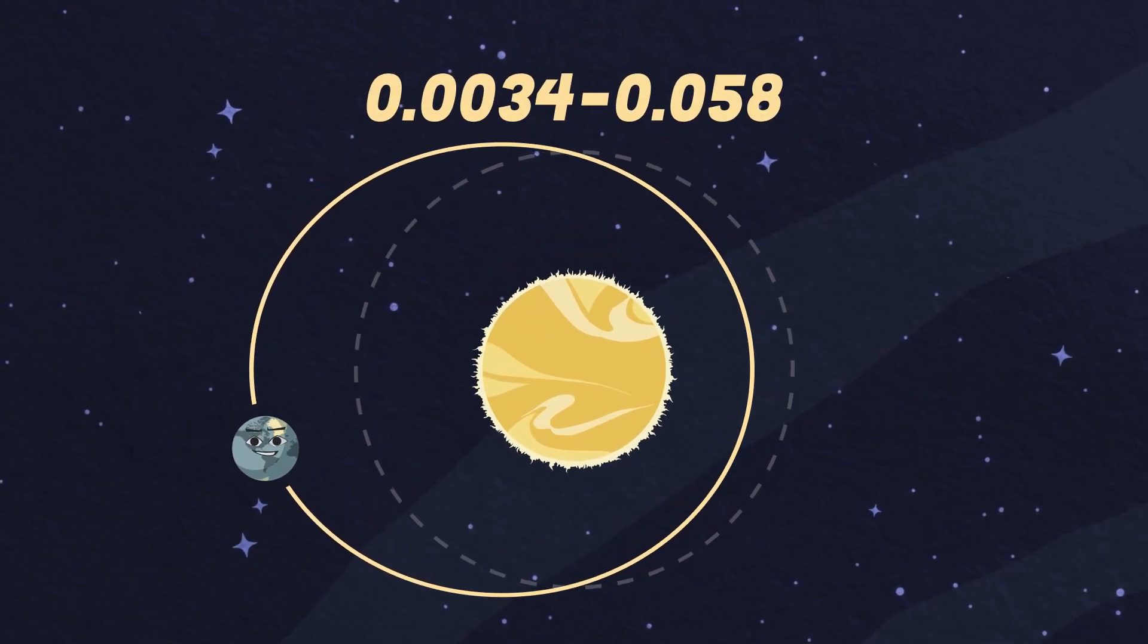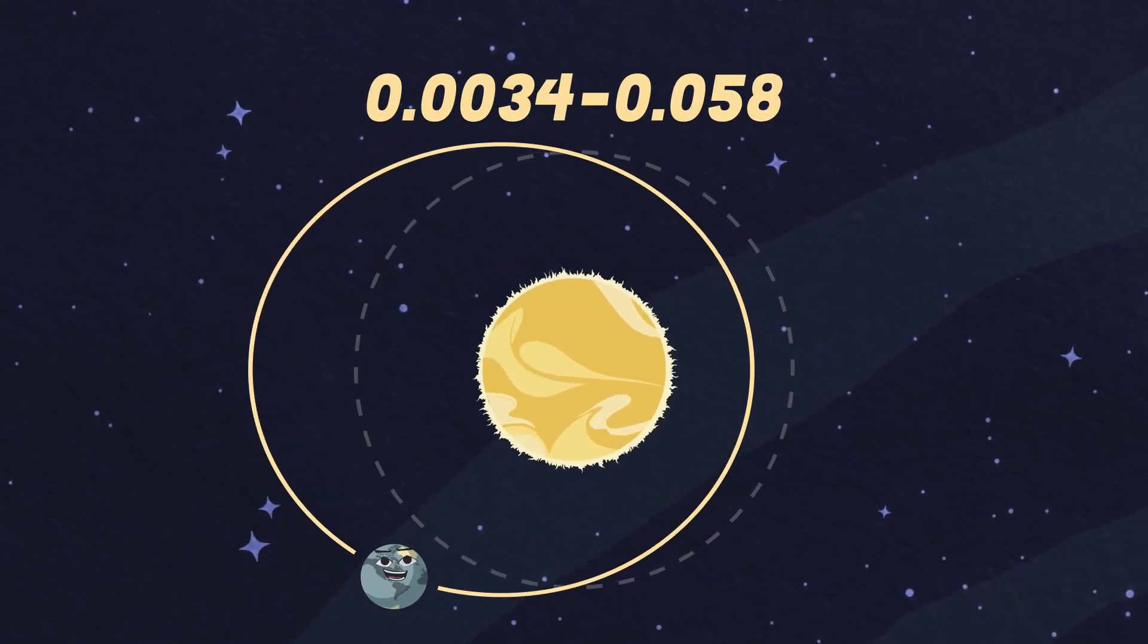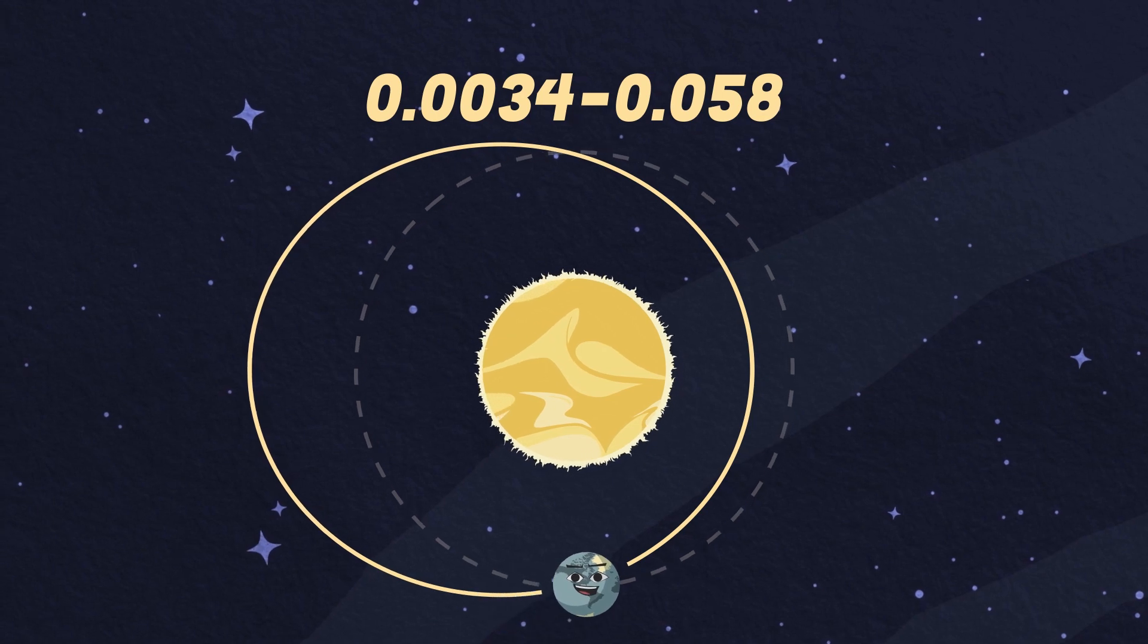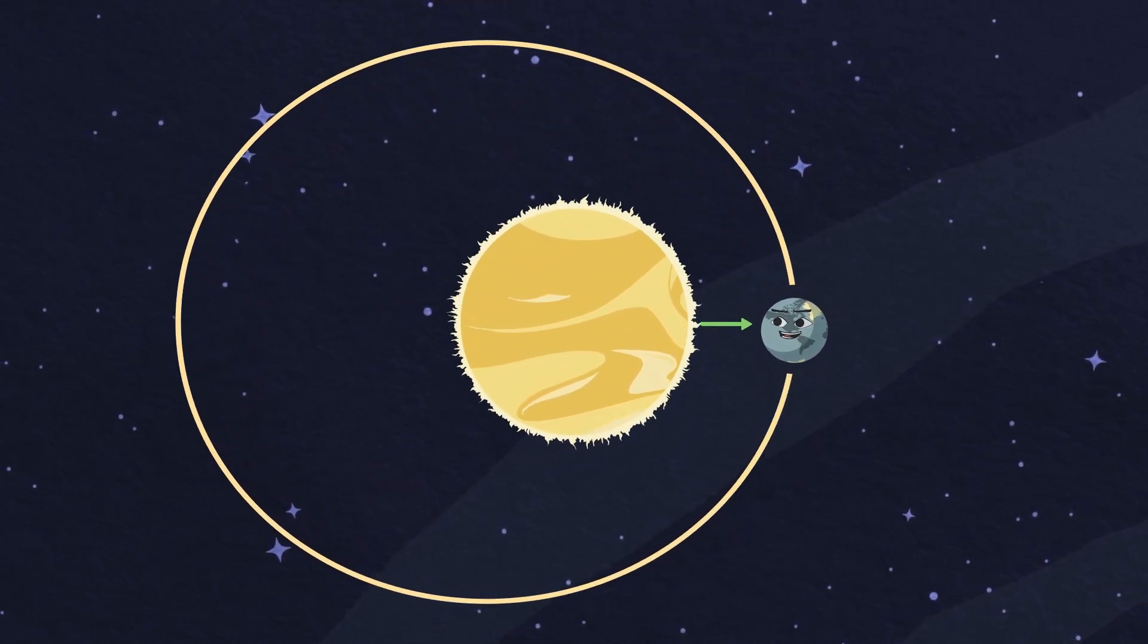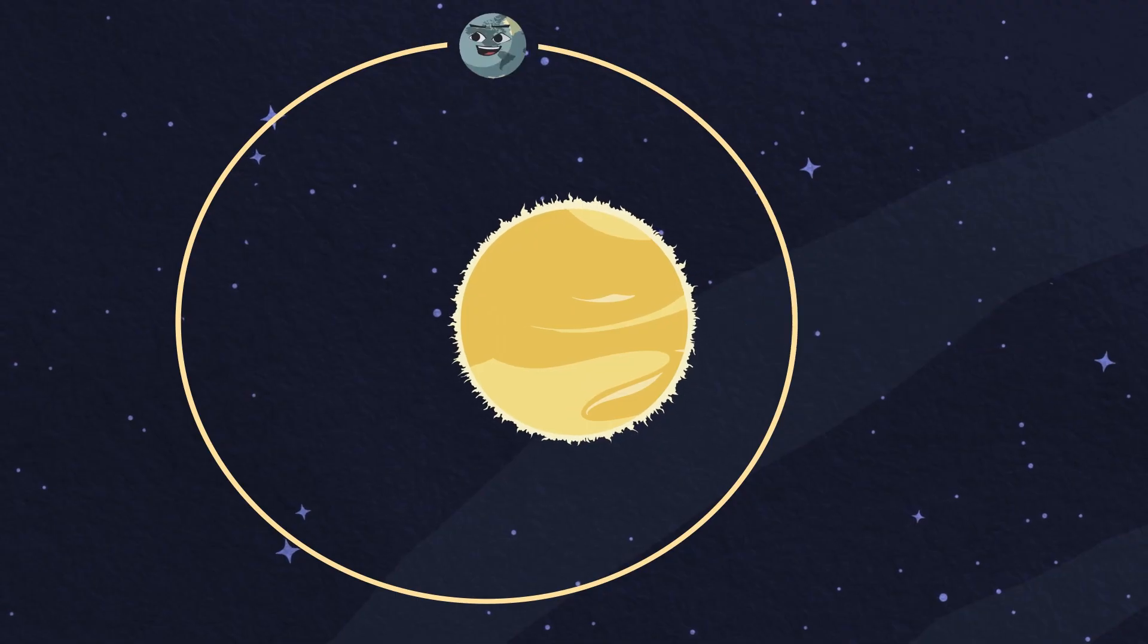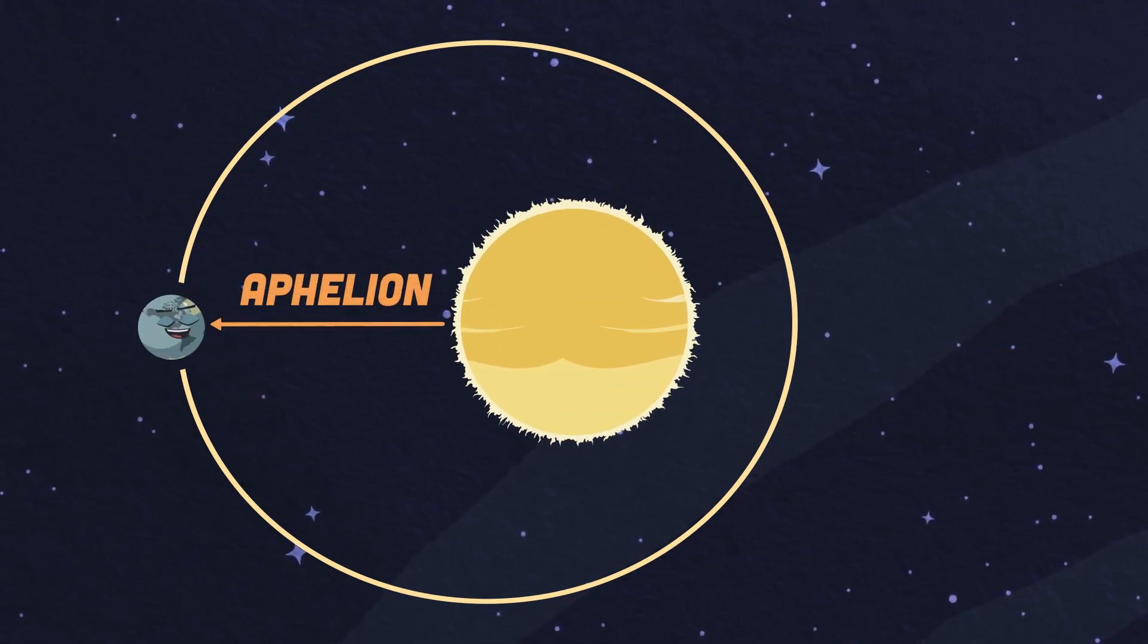Earth's orbit varies between 0.0034, almost a perfect circle, to 0.058, which is slightly elliptical. The Earth's closest approach to the Sun is called perihelion, and its farthest distance is called aphelion.